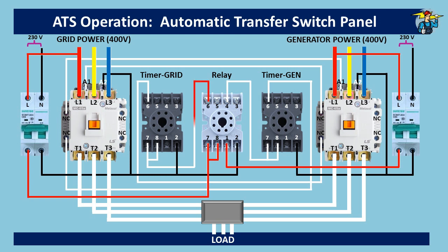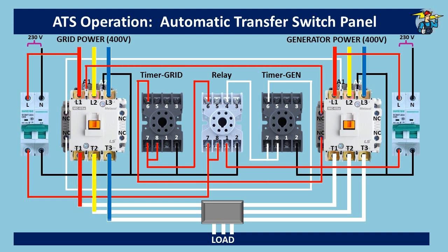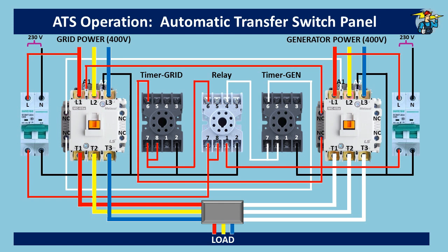At the same time, since the relay now has power, port 6 gets power through common port 8. This powers the grid timer, and after the set delay time, port 6 allows power to A1 of the grid contactor, restoring three-phase power to the load through grid power. The only thing needed now is to go and stop the generator manually.